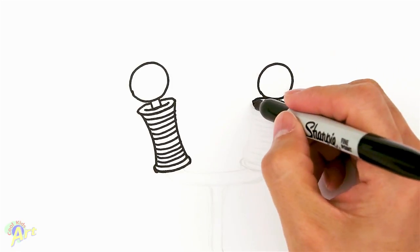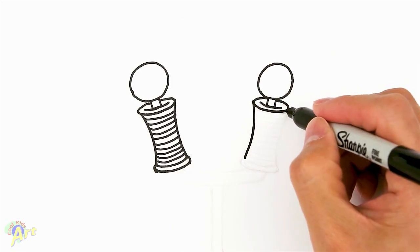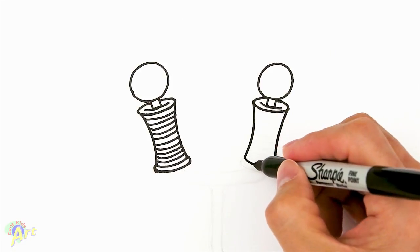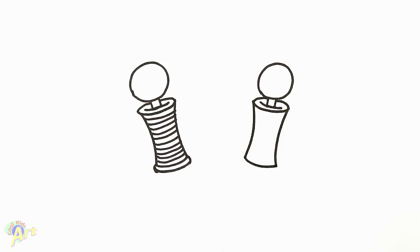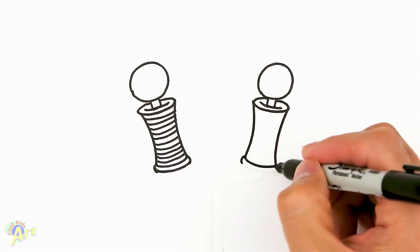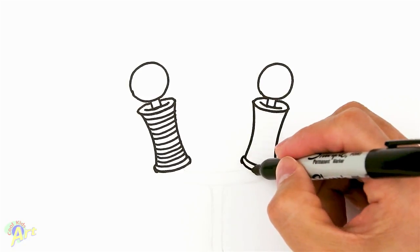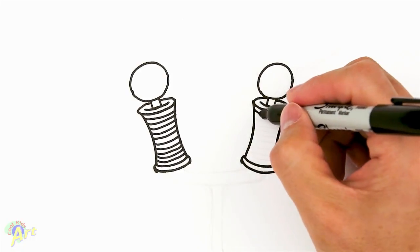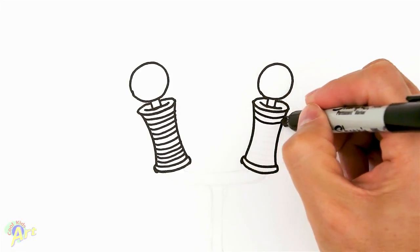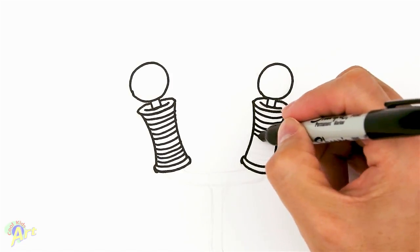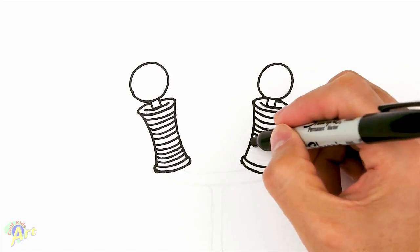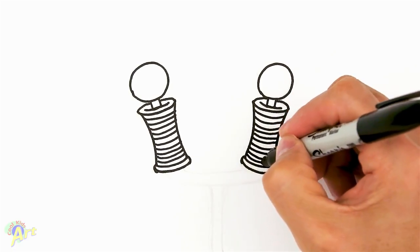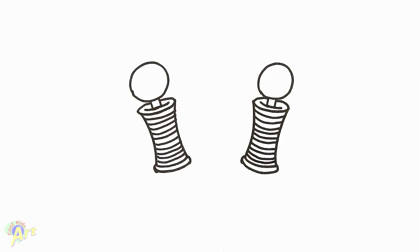Alright, and then the same thing here. We're gonna go just kind of pinch it in a little bit. Close it off. Bracket, another curve. Okay, and then finish up with this coil again. So we're just gonna keep going. This is a pretty cool looking axe. Alright, and then let's see it.